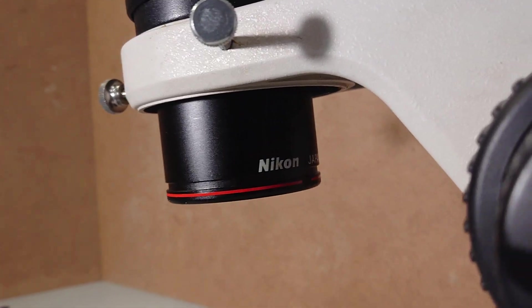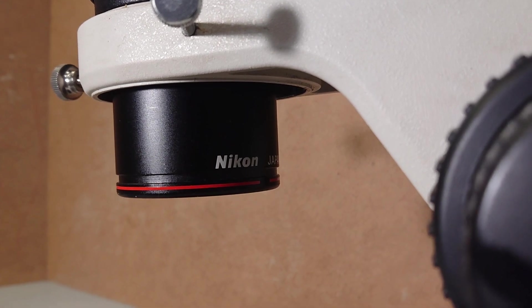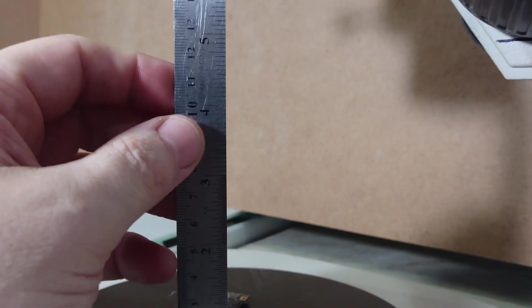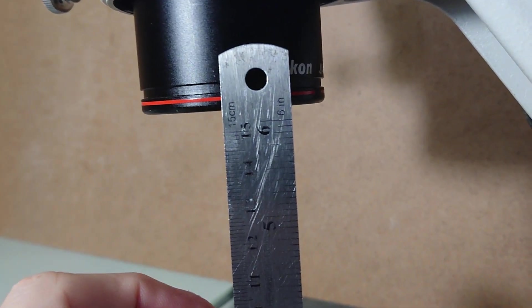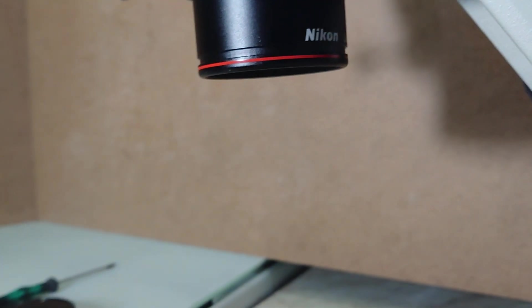I have got Nikon's Ediplan 0.5x objective with working distance of 150 mm. Technically it goes to be 154 mm even. It happens.